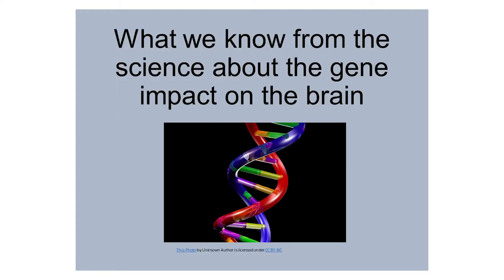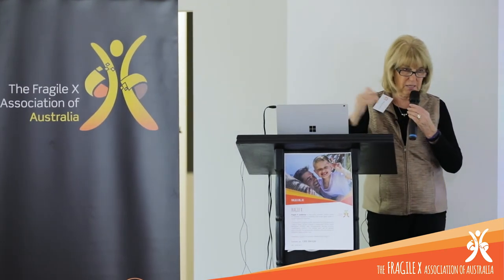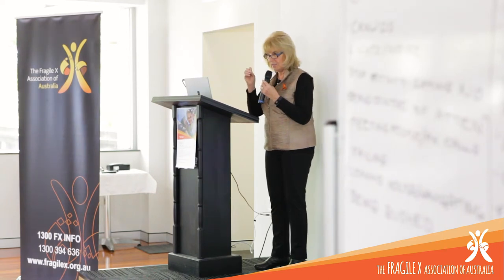We'll go from the science related to the gene and its impact on the brain. Jonathan's slides showed how the lack of protein affects brain development, playing a major role in pre- and post-natal development. This protein is extremely important for learning and cognition, and it also regulates other genes and proteins. One thing I don't want you to take away is that because they don't produce protein, it's all lights out. We see those glimmers — things they're good at, things they've picked up incidentally.